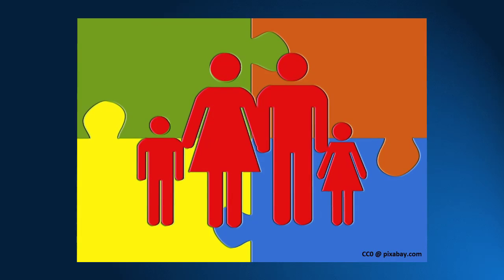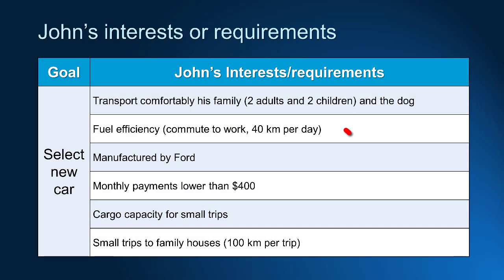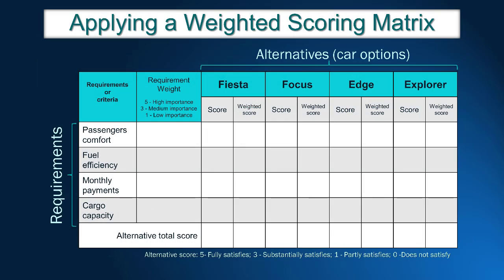Let's see who is involved in the decision: John, his wife, a 10-year-old boy, a 7-year-old daughter, and a dog. John needs a car to drive every day to work, and monthly they visit relatives that live 100 km away. It is just a day trip.